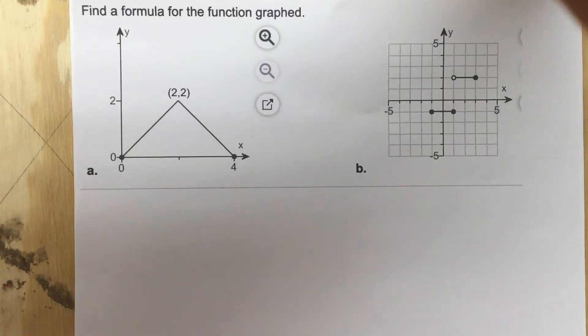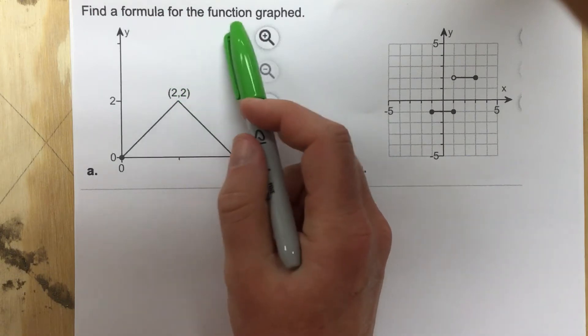This is problem number 5 from section 1.1. In this problem it says, find a formula for the function graphed.